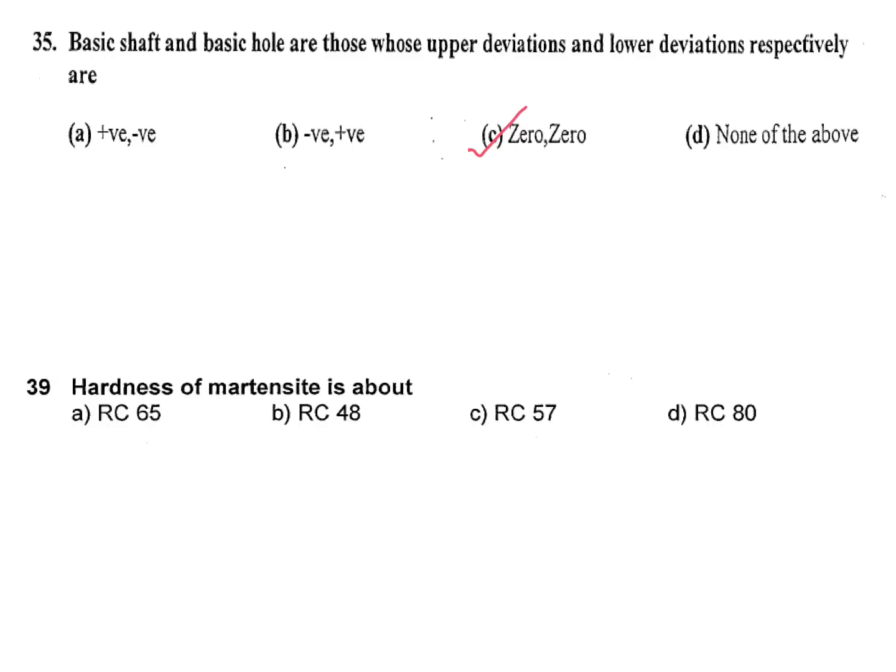Hardness of martensite is about. I told martensite: if you cool austenite rapidly, rapid cooling, then you will get martensite. Its hardness is RC 65, Rockwell hardness. It is 65. This question was asked three times in ISRO. Thank you.